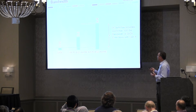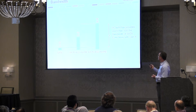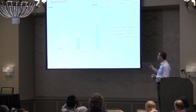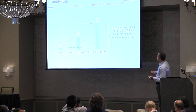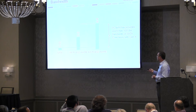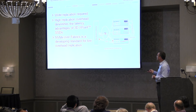Bandwidth: NVMe has a lot more bandwidth. This is with Gen 3 PCIe — 6.4 gigabytes per second. That's really good.